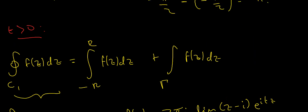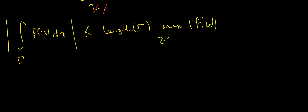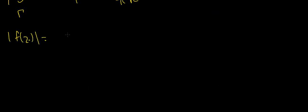As r goes to infinity, the integral from minus r to r approaches my original integral. That leaves the integral over gamma 1. By the estimation lemma, the absolute value of the integral over gamma 1 of f(z) dz is less than or equal to the length of arc gamma times the maximum value of |f(z)| along the curve. The arc length is π·r. For the denominator, by the reverse triangle inequality, |z² + 1| ≥ |z|² − 1 = r² − 1, so 1/|z² + 1| ≤ 1/(r² − 1).